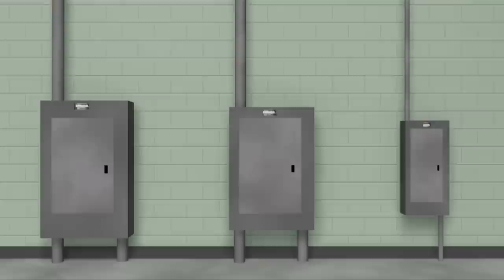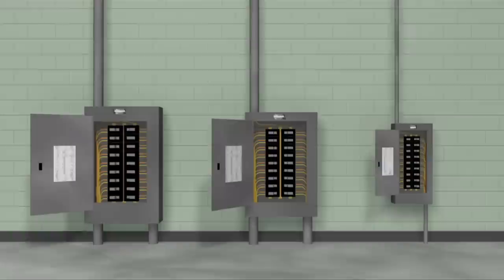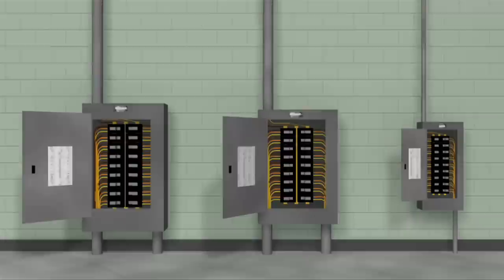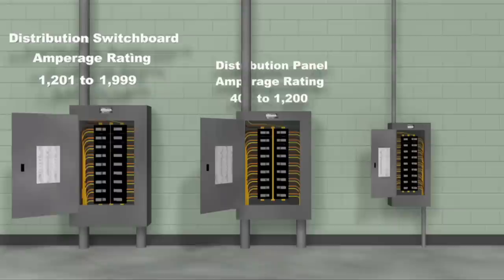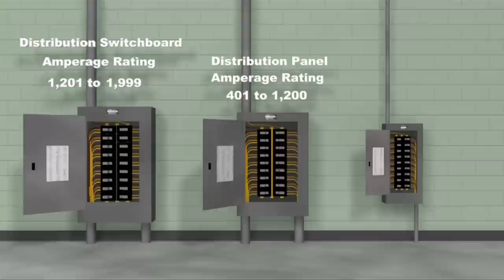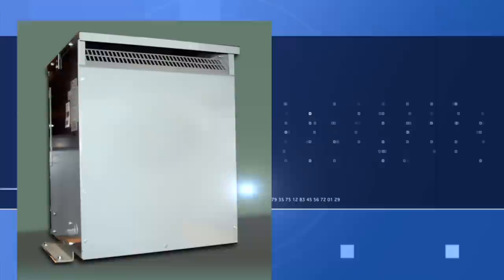A distribution switchboard, a distribution panel, and a branch circuit breaker panel all have the same functionality. They can contain many circuit breakers distributing voltage to all areas of the facility. What differentiates them from each other is their amperage rating. Distribution switchboard is an electrical panel with an amp rating between 1,201 and 1,999. A distribution panel has an amperage rating of 401 to 1,200. A branch circuit breaker panel has an amperage rating that is equal to or less than 400 amps.